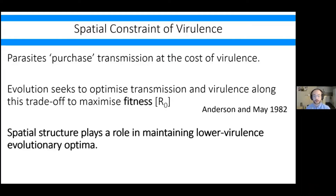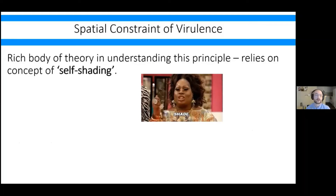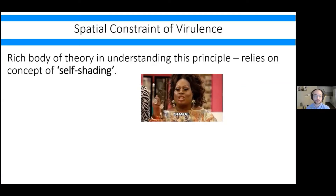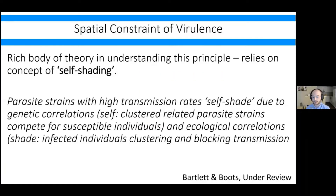Critically, we understand that spatial structure plays a role in maintaining lower virulence evolutionary optima. To turn that on its head: when we mix spatially structured systems and remove some of the spatial structuring, we typically see evolution towards more virulence and more deadly forms. The optimum virulence changes, and it is within our interests in the evolutionary and ecological management of burdensome diseases to try and maintain some spatial structure in order to bias them towards maintaining a less deadly evolutionary optimum. A lot of this theory centres around the concept of what we term self-shading.